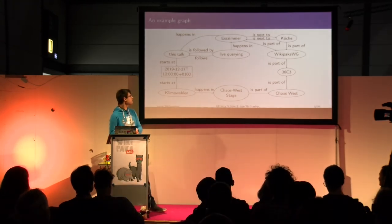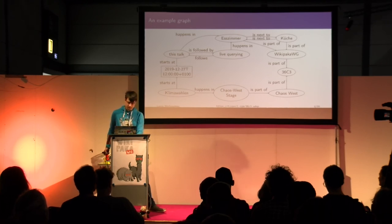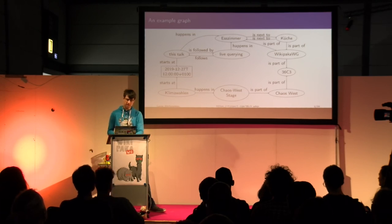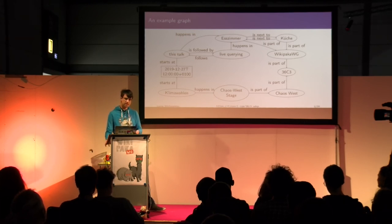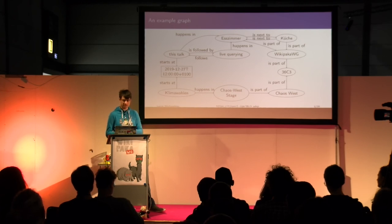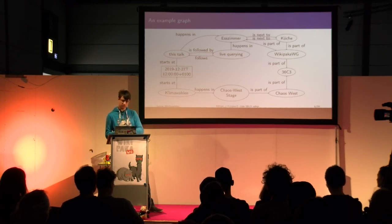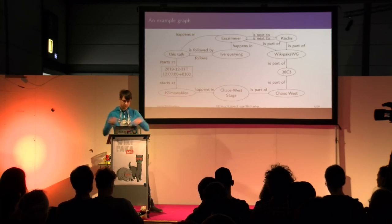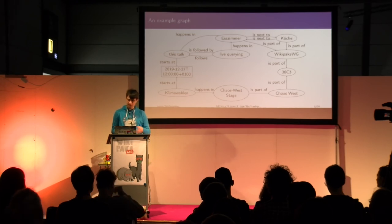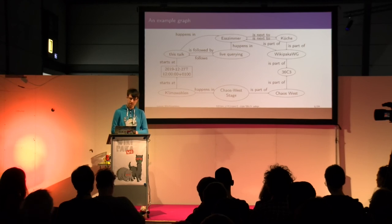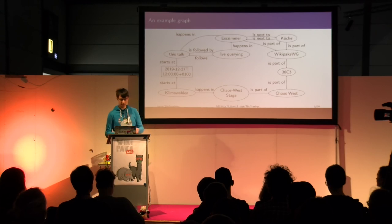The s-zimmer, the dining room, is next to the kitchen, and both of them are part of the Wiki Paka WG, which is part of 36c3. The talk happens right now, and at the same time there's a talk about state elections on the Chaos West stage, which is part of the Chaos West assembly, which is also part of 36c3. This graph has a few important properties — there's some redundant information, like if this talk is followed by live querying you don't really need to know that live querying follows this talk, but it doesn't hurt to have it. The data model is simply subject, predicate, object.